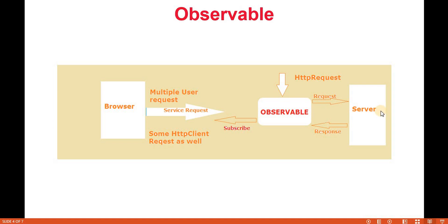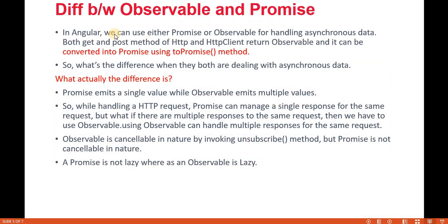In the case of observables, it gives the response in a streaming, packaged way. For example, if we send one request whose response involves three parts — like a success status and the output data — the observable gives the response simultaneously in a streaming way. It does this using the subscribe mechanism, which we will discuss in coming videos.